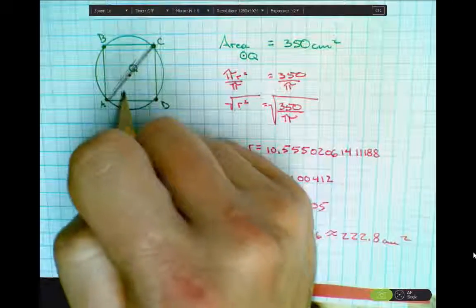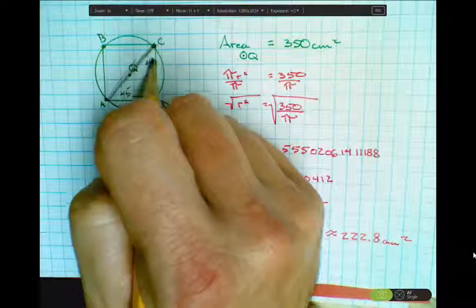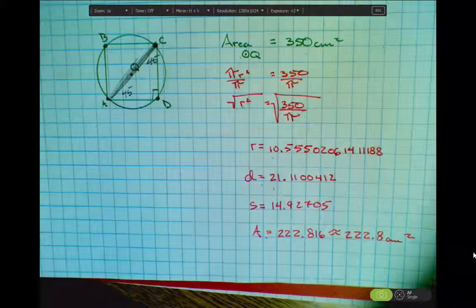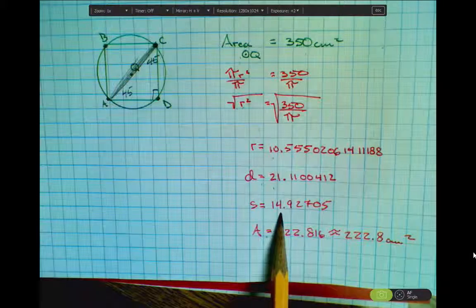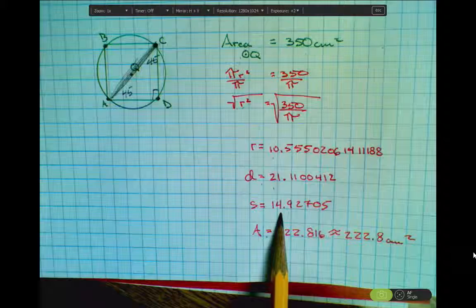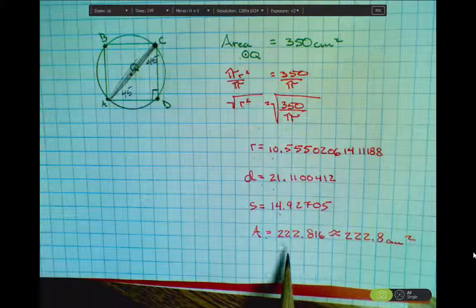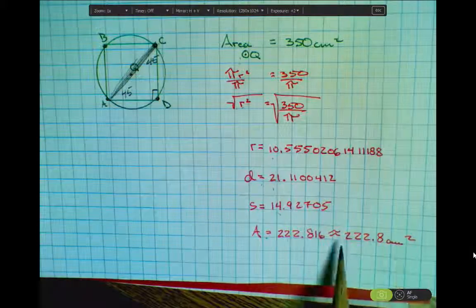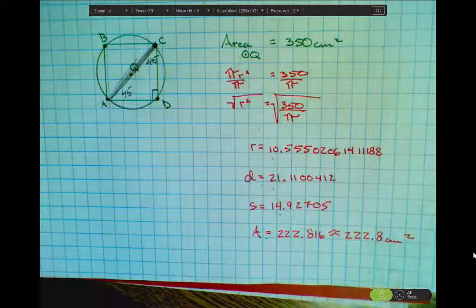Again, we have a 45, 45, 90 right triangle. So if I take the diagonal or the hypotenuse and I divide it by root 2, I get approximately 15. And then to get the area of the square, I take the side and square it and multiply by itself. So my solution is approximately 222.8 square centimeters.